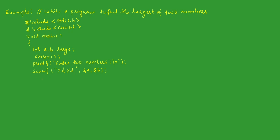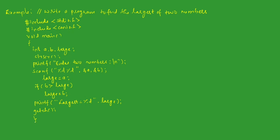After receiving the input, I set 'large' equal to 'a'. Now we check the simple if statement: if b is greater than large, then large is equal to b — with a semicolon. After that, we print the result using printf with the format 'largest = %d', associated with the variable 'large'. Finally, I write the 'getch()' function and a curly closing brace.